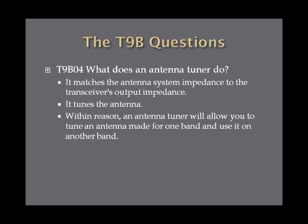What does an antenna tuner do? An antenna tuner matches the antenna system impedance to the transceiver's output impedance — essentially, it tunes the antenna. Based on what frequency you're using and what your antenna is tuned to, an antenna tuner can electronically lengthen or shorten your antenna so that its impedance matches the signal you're sending out of your transmitter. Within reason, an antenna tuner can allow you to tune an antenna made for one band and use it on another band, so they're a handy piece of gear to have.